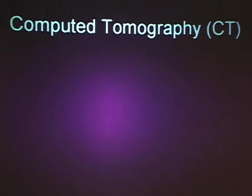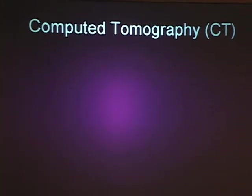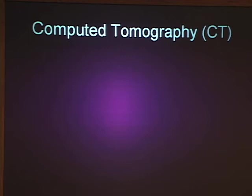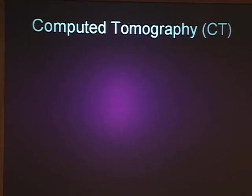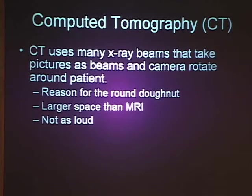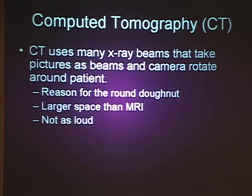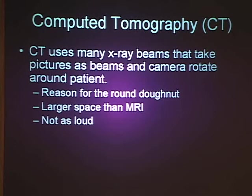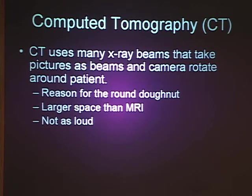CT — or CAT scans — is a big donut where many x-rays spin in a circle around you and take pictures from different angles. That's why it's round. It has a larger space than MRI so we have fewer problems with claustrophobic patients, and it's not as loud. X-rays are radiation, and at children's medical centers we're always looking to reduce radiation as much as possible to minimize any theoretical or real risk for the future.